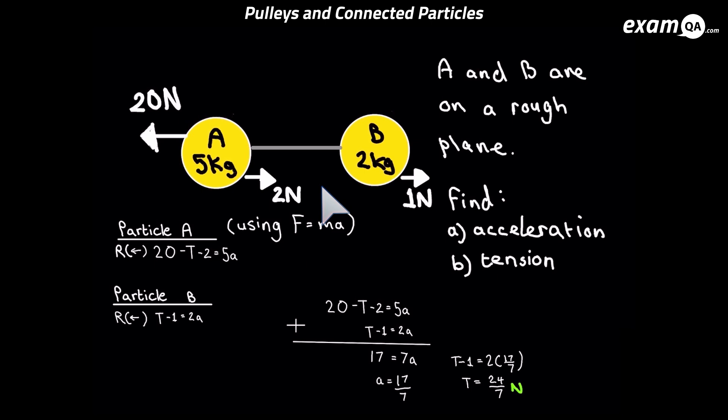It means there'll be no tension in it. There will just be a force to the left of 20 Newtons and a total force to the right of 3 Newtons. So it'll simply be 20 minus 3 as all the forces, which will be 17, and that will be equal to MA.